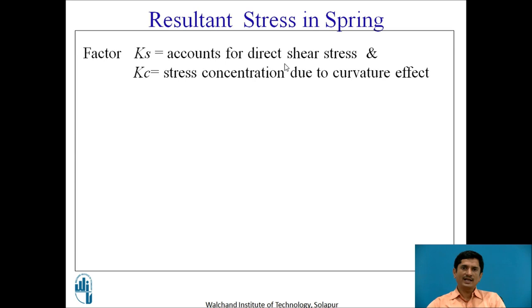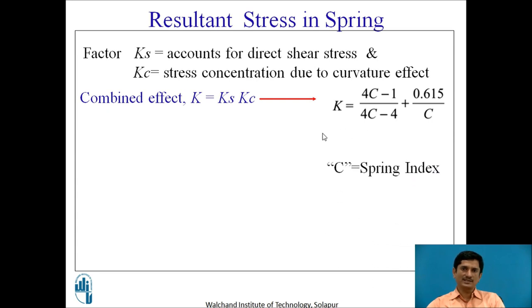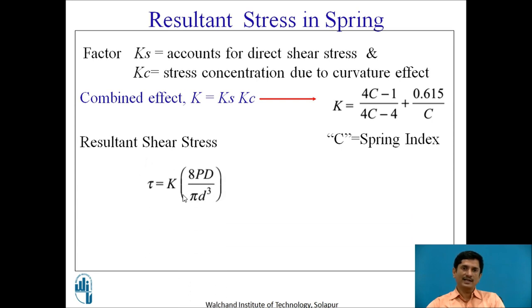Then these two factors, ks and kc. Ks accounts for the direct shear stress and kc is a stress concentration due to curvature effect when we coil a rod into a spring. But these two are acting simultaneously. Let us introduce a factor k, ks into kc. This factor is 4c minus 1 upon 4c minus 4 plus 0.615 by c, where c is the spring index. Hence, the resultant shear stress is rewritten as tau equals k into 8P D upon pi d cube. This k is the stress factor or Wahl factor.